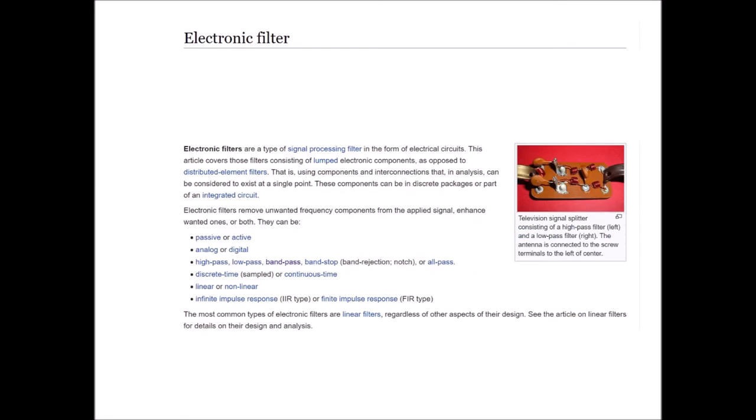Electronic filter. Electronic filters are a type of signal processing filter in the form of electrical circuits. This article covers those filters consisting of lumped electronic components, as opposed to distributed element filters. That is, using components and interconnections that, in analysis, can be considered to exist at a single point. These components can be in discrete packages or parts of an integrated circuit. Electronic filters remove unwanted frequency components from the applied signal, enhance wanted ones, or both. They can be passive or active, analog or digital.